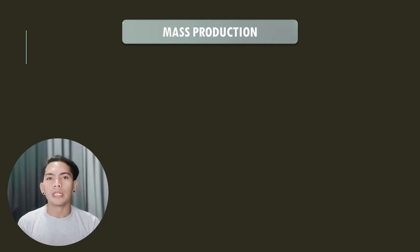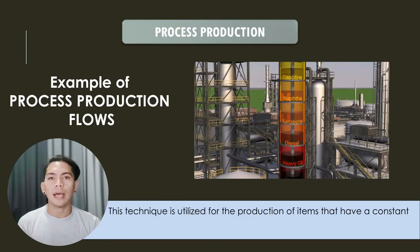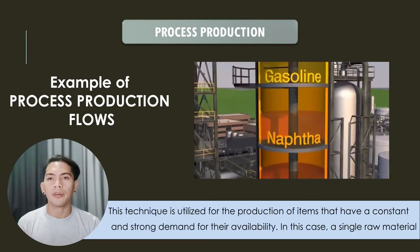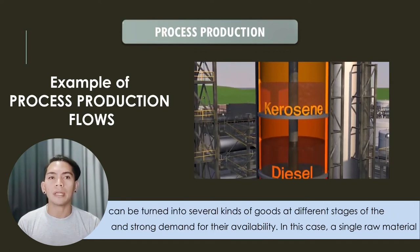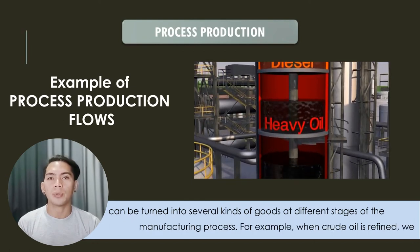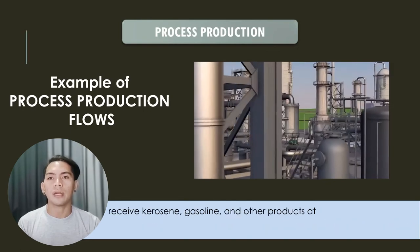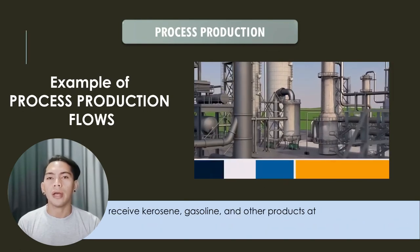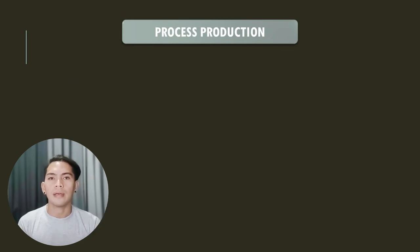The second type of continuous production system is process production. This technique is utilized for the production of items that have a constant and strong demand for their availability. In this case, a single raw material can be turned into several kinds of goods at different stages of the manufacturing process. For example, when crude oil is refined, we receive kerosene, gasoline, and other products at the different stages of the manufacturing process.